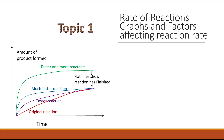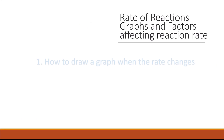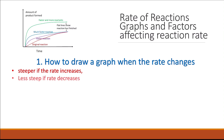Topic one is the rate of reaction graph and factors affecting reaction rate. This is a guaranteed topic — it will always be in your exam. You need to know how to draw a graph when the rate changes. They will most probably give you a graph for a certain reaction and ask you to draw the graph when some factor has changed, like the concentration or temperature. Remember that the line is going to be steeper if the rate increases, and less steep if the rate decreases.